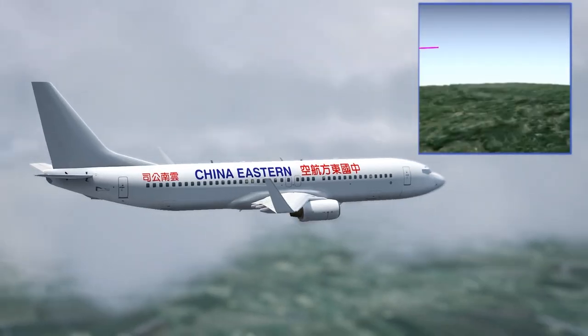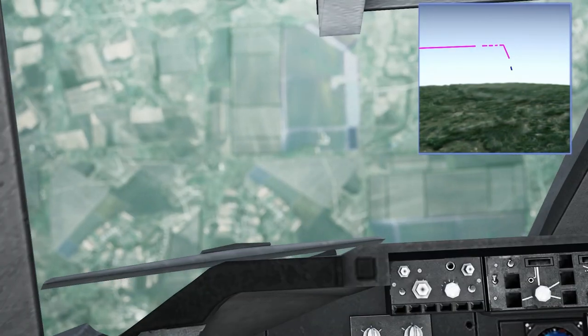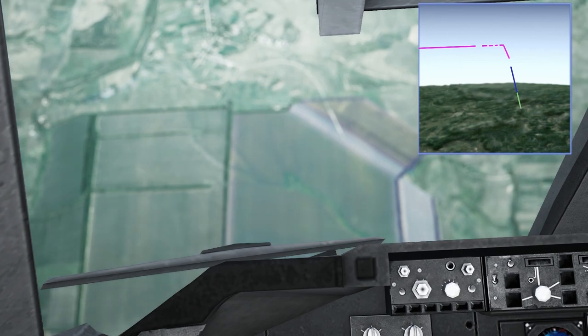Data from flight radar 24 shows that just after 2:20 p.m., the plane was at 29,100 feet when it began to dive down at speeds of up to 348 miles per hour.